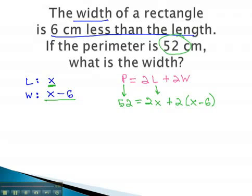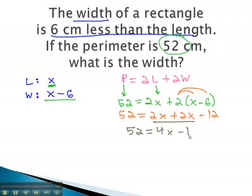We now have an equation we can quickly solve to answer the question. First, we distribute through the parentheses. We now have 52 equals 2x, plus 2x, minus 12. Combining like terms gives us 52 equals 4x, minus 12.